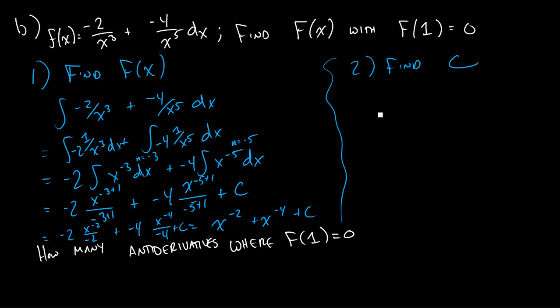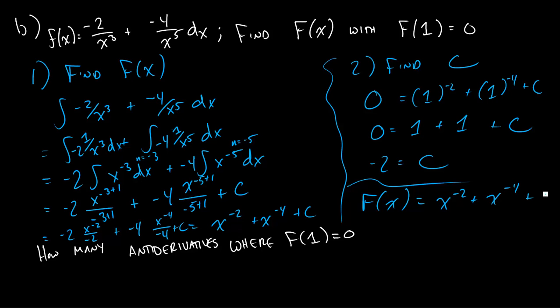So now we have to find c. We'll plug in 1. So we'll have 1 to the negative 2 plus 1 to the negative 4 plus c, and the output is 0. You could plug these in your calculator, but you shouldn't need to. 1 squared is just 1, 1 to the 4th is just 1, and 1 divided by those is just 1. So we'll have 0 equals 1 plus 1 plus c. We'll get negative 2 equals c. Our final antiderivative is the single function where if I take the derivative, I'll get the little f I started with, and if I plug in x equals 1, I'll get 0 as an output. There is one antiderivative where that is the case.